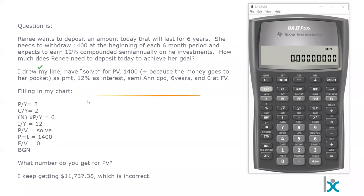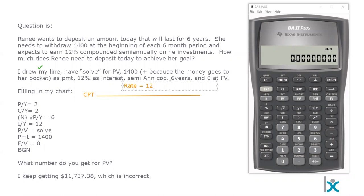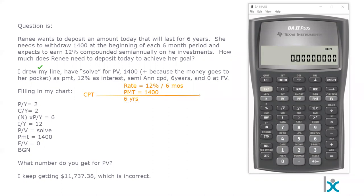This is exactly from the student's email. We're trying to compute the present value. We know our rate is 12%, compounding every six months. You're not getting 12% every six months, but it's compounding every six months. We know the payment is $1,400 — money coming to the student, so correctly identified as a positive. This is all happening over a period of six years, and we're going to be left with nothing at the end.